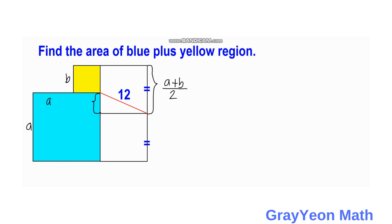And this length should be A plus B over 2 minus B, or simply A plus B over 2 minus 2B all over 2, which becomes A minus B over 2. And this would become A minus B over 2, that is this distance.